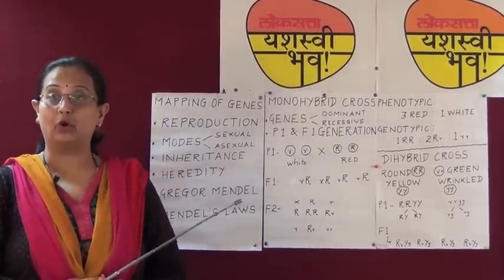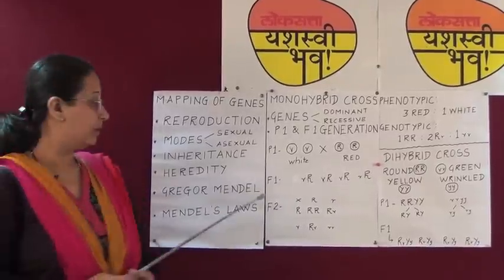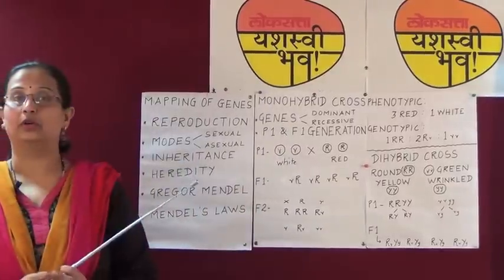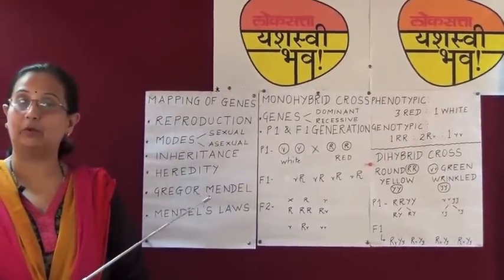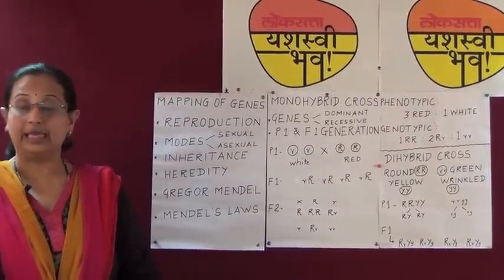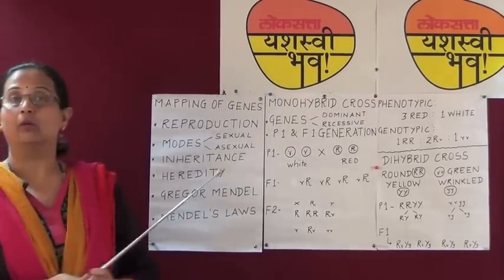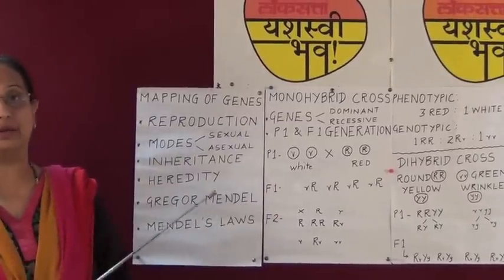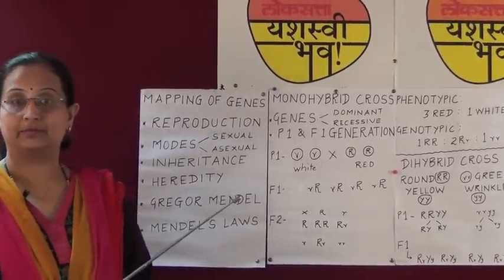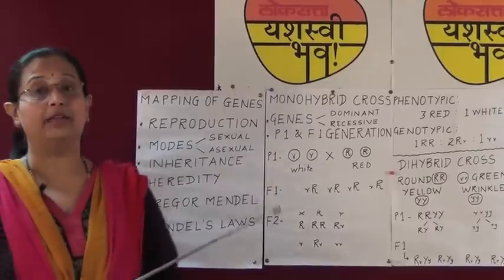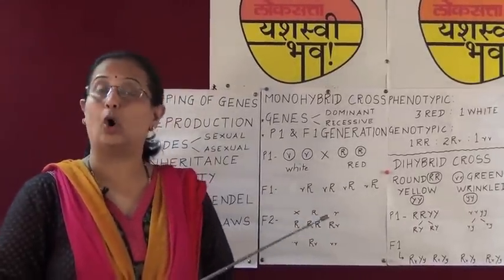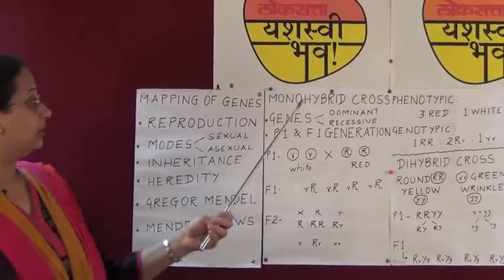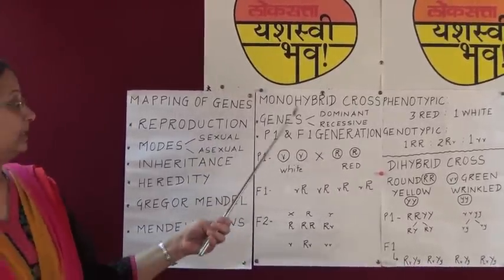We shall now study the monohybrid cross ratio that was performed with the help of garden peas. The name monohybrid indicates that he crossed only one pair of characters. He selected the red and white flowers of the pea plants. Let us understand the terms that are involved in this crossing.